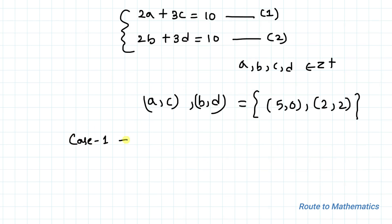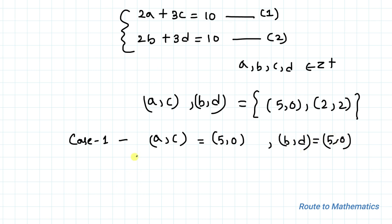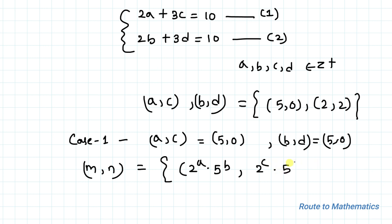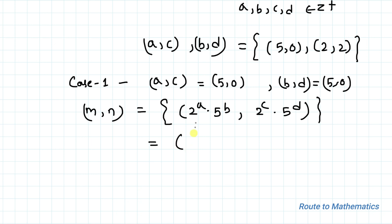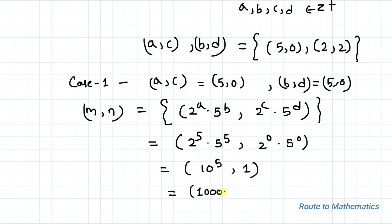Case 1: Take (a, c) = (5, 0) and (b, d) = (5, 0). Then m = 2⁵ · 5⁵ = 10⁵ = 100000, and n = 2⁰ · 5⁰ = 1. So (m, n) = (100000, 1) is one solution.